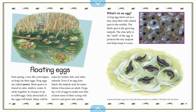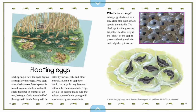What's in an egg? A frog egg starts out as a tiny clear blob with a black spot in the middle. The black spot is the growing tadpole. The clear jelly is the shell of the egg — it protects the tiny tadpole and helps keep it warm. A poison dart frog's eggs are so tiny they can grow in a puddle on a leaf in the rainforest.